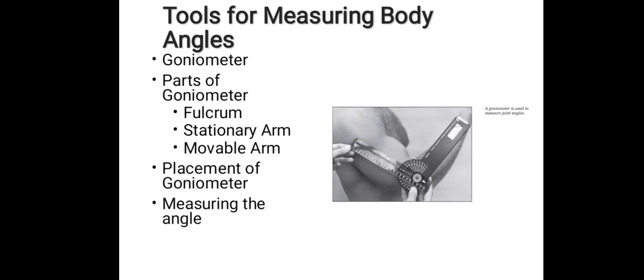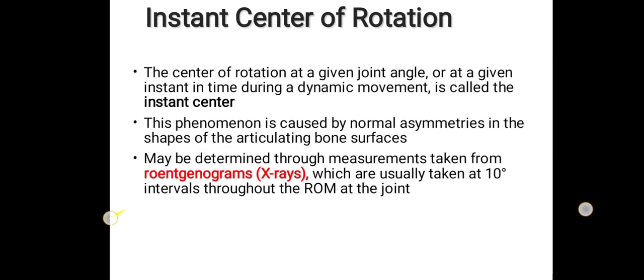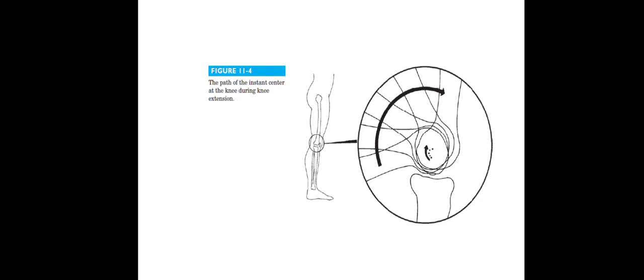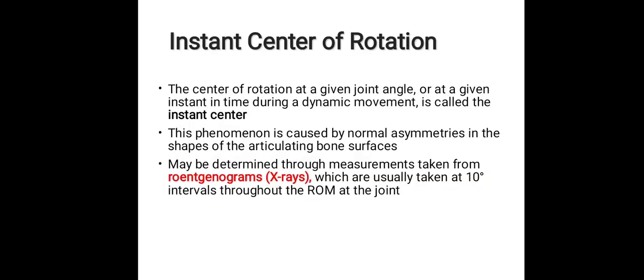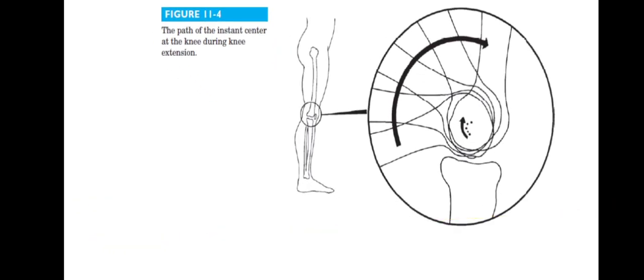The tool for measuring a body angle is the goniometer. Parts of the goniometer include the fulcrum, stationary arm, and movable arm, used for placement and measuring angles. The instant center of rotation is the center of rotation at a given joint angle or at a given instant in time during dynamic movement. This is caused by normal asymmetry in the shape of articulating bone surfaces, and may be determined through measurements from radiograms or X-rays, usually taken at 10-degree intervals through the range of motion at a joint.